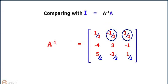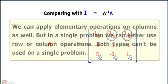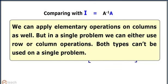Comparing with I is equal to A inverse into A, we get A inverse. We can apply elementary operations on columns as well, but in a single problem we can either use row or column operations. Both types can't be used on a single problem.